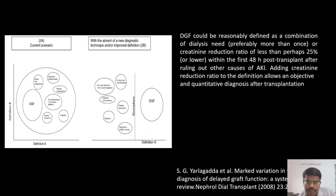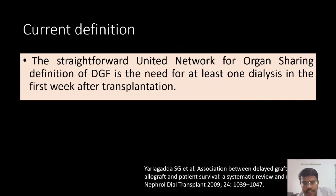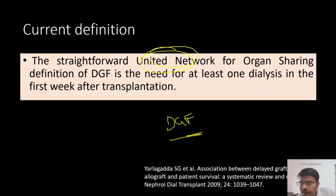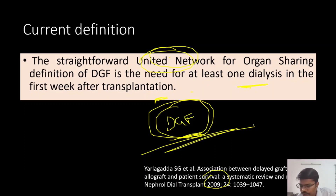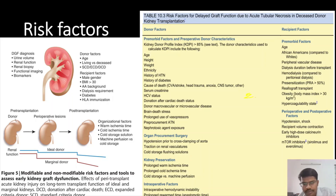So the final definition that can be reliably used is based on dialysis, and this is the standard definition as per the United Network for Organ Sharing. They have defined delayed graft function as the need for at least one dialysis in the first week of the post-transplant period. This can be quoted as the standard definition per the United Network for Organ Sharing. This is the delayed graft function definition.